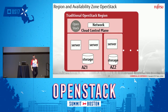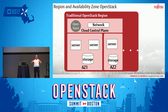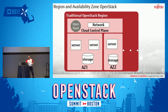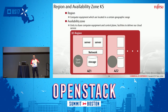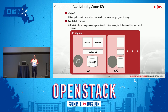A traditional OpenStack setup has a region with availability zones, and in each availability zone you have servers and storage. When you move to a public cloud scenario with separate regions and availability zones with large distances between them, you have major issues getting the control plane to stretch across. What you're looking for is a full installation of OpenStack within each availability zone. But what's missing is central login and central control — without that, you just have separate deployments of OpenStack. That's what we're trying to solve.